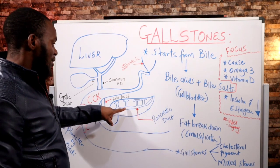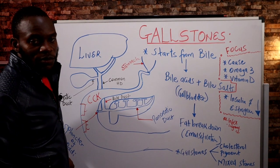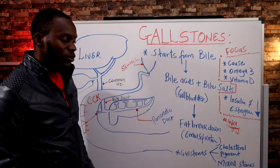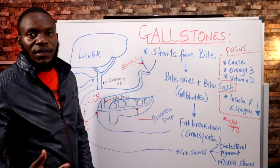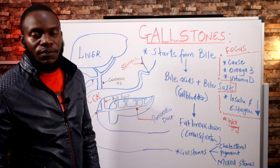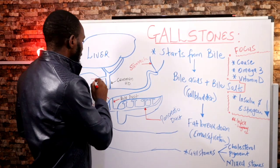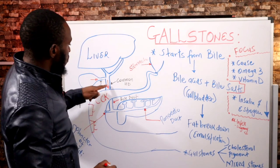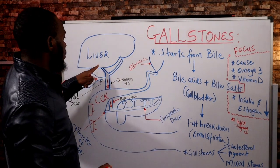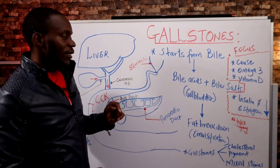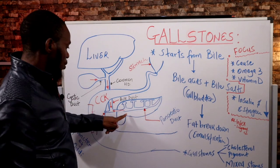The bile duct joins the pancreatic duct and deposits its components into the duodenum through the sphincter of Oddi. The common hepatic duct carries components from both the liver and the gallbladder down into the bile duct, which releases bile juice. This joins the pancreatic juice from the pancreas, and together they are deposited into the small intestines to help break down fat.